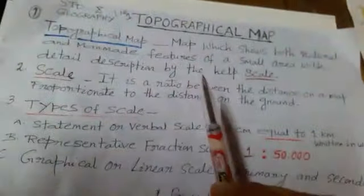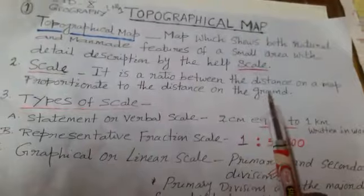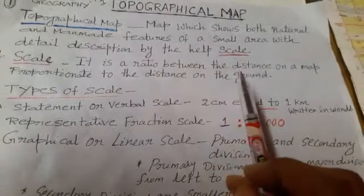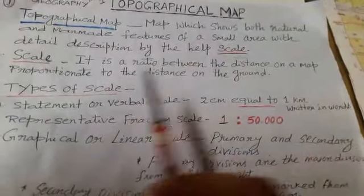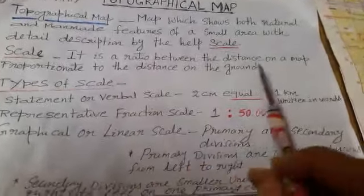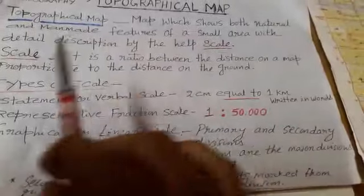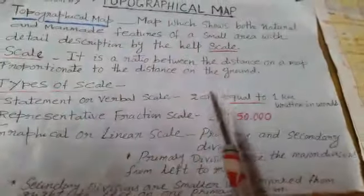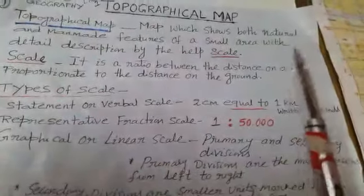Now I will discuss about scale. What do you mean by scale? It is a ratio between the distance on a map to the actual distance on the ground, or scale is the map distance divided by ground distance.